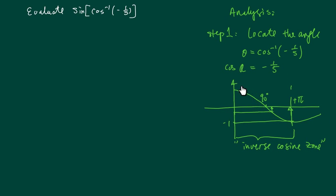Now the cosine curve looks something like this. The inverse cosine zone is defined between 0 and 180 degrees.